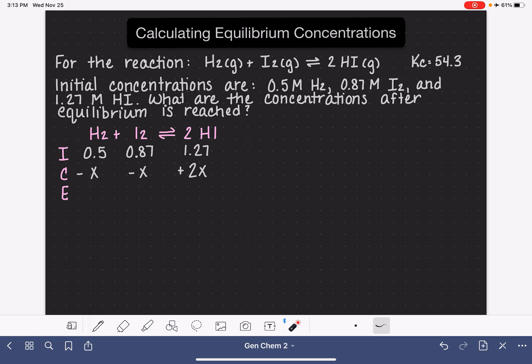The last row, E, represents the concentrations at the end once the system has reached equilibrium. Sometimes we say that E represents equilibrium concentration. So after we react the X amount of H2 and I2, how much of H2 and how much of the I2 will we have left? This is just going to be the math that is represented by each column. So H2, we're starting with 0.5 and we're losing X amount of it. I2, we're starting with 0.87 and we're losing X amount. HI, we're starting with 1.27 and we are gaining 2X. And these are our ending concentrations.